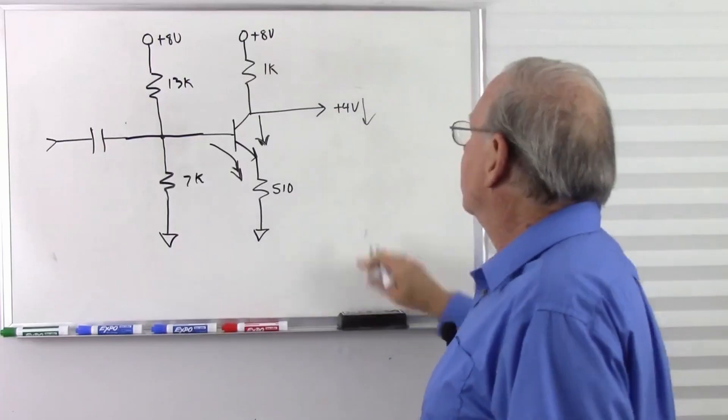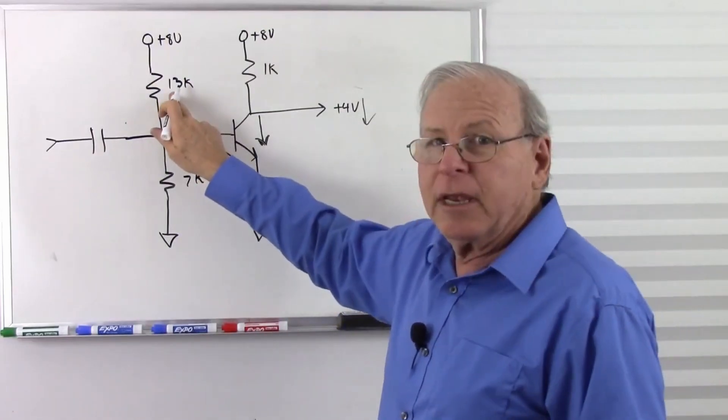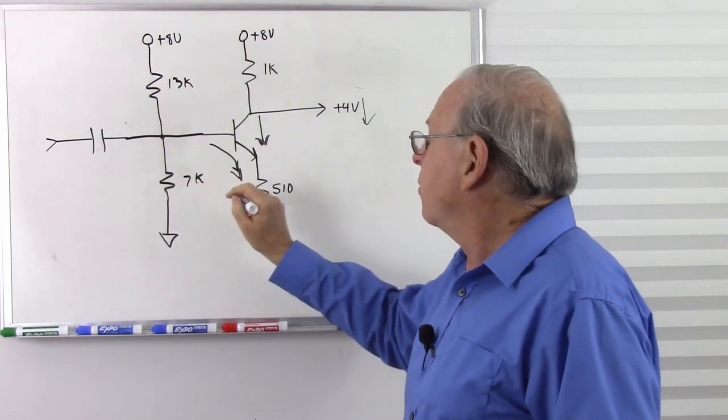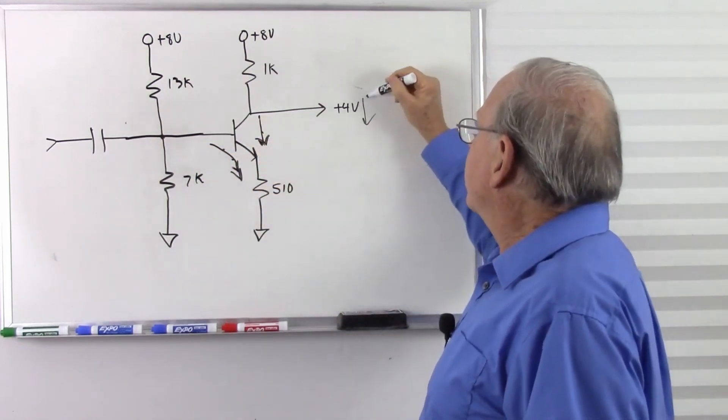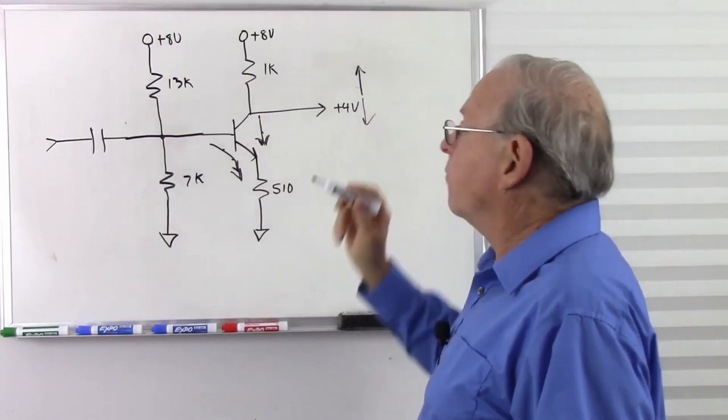If I made this something higher than it is, making this lower, then I would get less current into the base, less current in the collector. That means this voltage would be something higher than 4 volts.